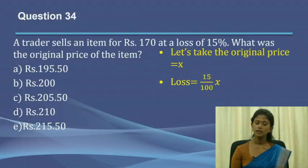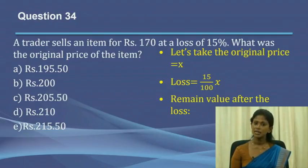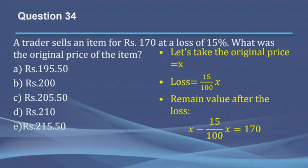The loss incurred from the original price is 15%, so loss equals 15 divided by 100 multiplied by X. The remaining value after the loss is the selling price of 170 rupees. So the equation is: X minus (15/100)X equals 170. By solving this equation, we find that the original price X equals 200. For this type of question, it is easy to take the original price as an arbitrary variable and follow the steps mentioned.